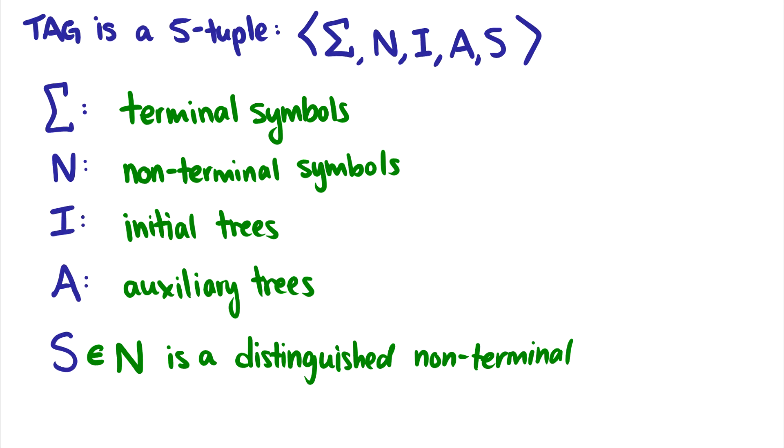N is a set of non-terminal symbols. What's new are the set I of initial trees, and set A of auxiliary trees. So initial trees are trees that either have the substitution nodes or maybe they don't have any substitution nodes at all. Maybe they're the things we stick into the other trees. And auxiliary trees are meant for adjoining.